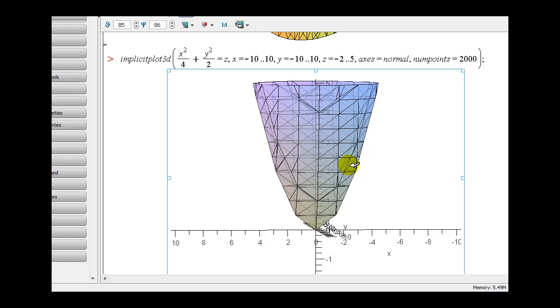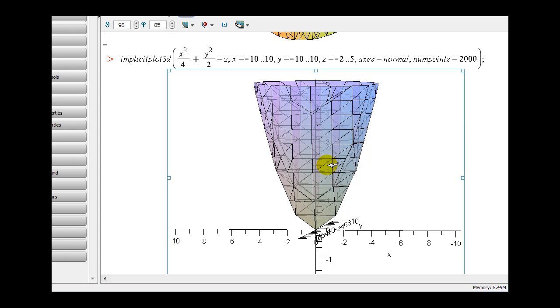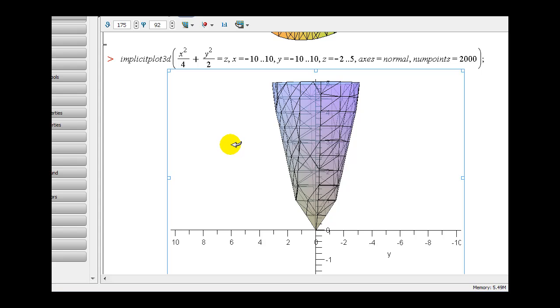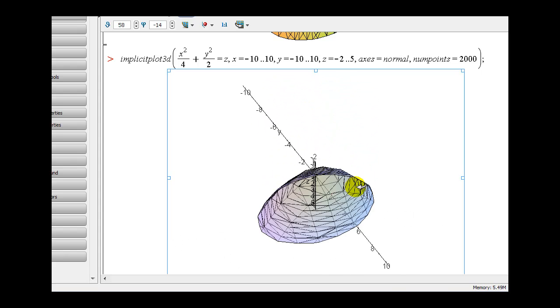If we take a look at the y, z trace, at this angle, notice we have another parabola, but now it is narrower than the x, z trace. So here is our elliptical paraboloid.